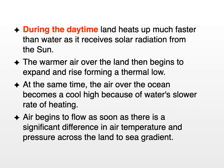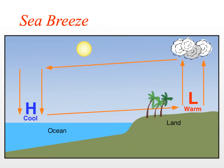During the daytime, land heats up much faster than the water as it receives solar radiation from the sun. The warmer air over land begins to expand and rise, forming a thermal low. At the same time, the air over the ocean becomes cool, high pressure develops, because of water's slower rate of heating. Air begins to flow as soon as there is a significant difference in air temperature and pressure across the land-to-sea gradient. Over the ocean, we have descending cool air; over the land, rising warm air — completing the circulation cell for this sea breeze system.